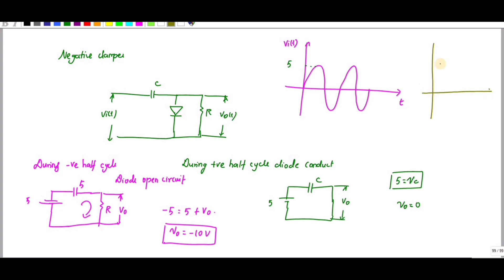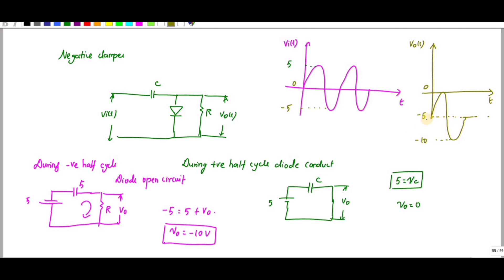Looking at the output waveform: during the positive cycle V_out is 0, and during the negative cycle V_out is minus 10. The waveform is at 0, then minus 5, then minus 10. The circuit gets clamped and the DC level shifts from 0 to minus 5 — since it shifts downward, it is called a negative clamper.